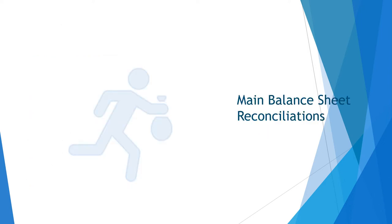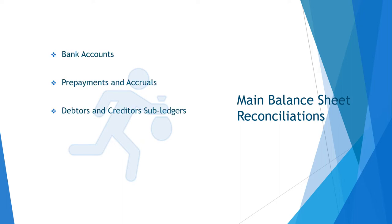Some of the main balance sheet reconciliations include bank accounts, prepayments and accruals, debtors and creditors subledgers, regulatory liabilities such as superannuation and taxes, and inventory. This list is by no means exhaustive, as every balance sheet account should be analysed and reconciled.